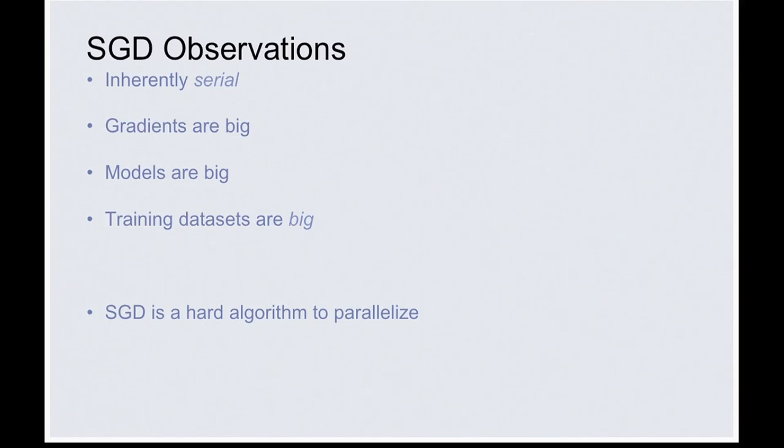Training datasets are big — not XLDB big, but the benchmarks people compete on are usually in the terabytes. The Sports 1M dataset was on the order of 50 terabytes, 1.3 million videos. We actually trained on only 10 terabytes — we threw away a lot of training data because long videos don't provide as much value per byte as short videos. If distributed training worked better, we'd be able to train on a ton more data, have much deeper and wider models, and we think nobody's been able to do it yet to achieve much better quality.